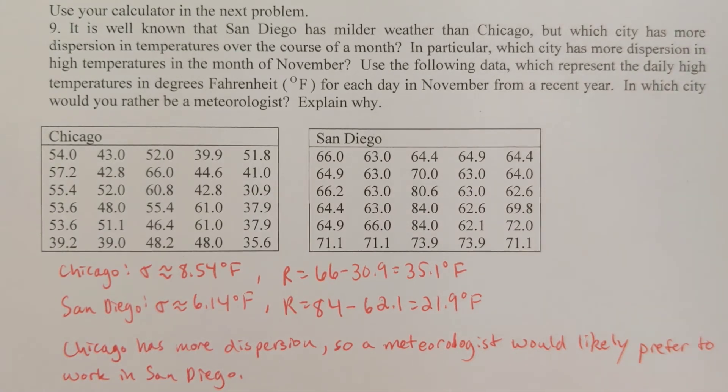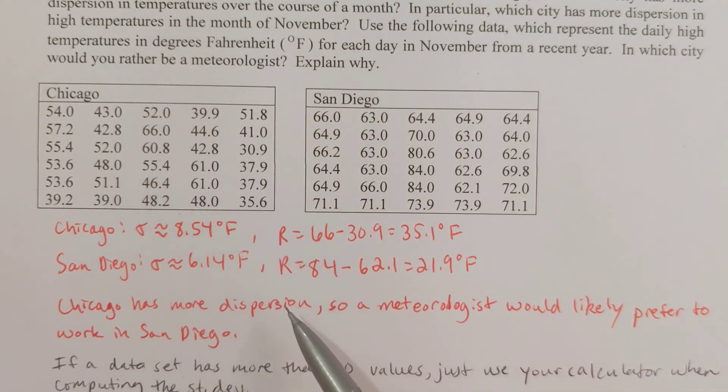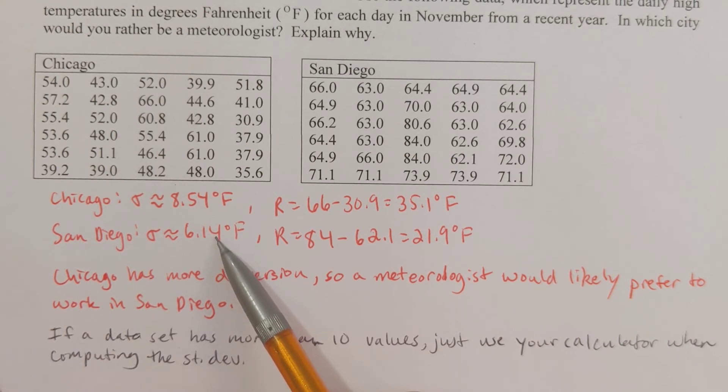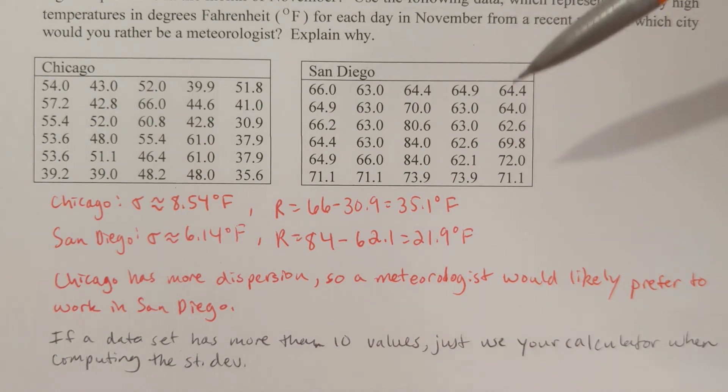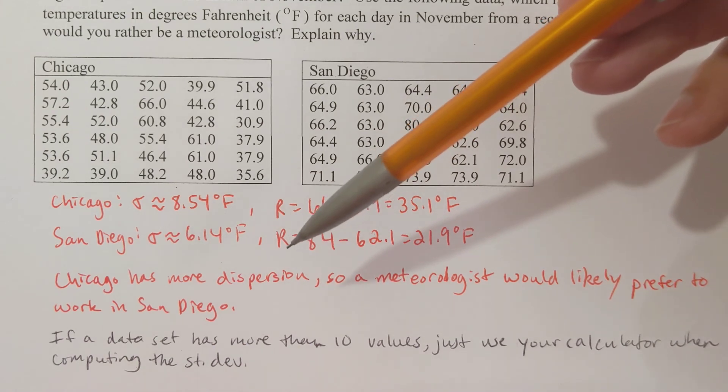So where would you rather be a meteorologist? They're not asking where the weather is better in November, they're asking where would you rather be a meteorologist. That's this person's job, right? And if you screw it up, then you're likely not going to be holding that job for very long. So where would you rather be a meteorologist? Well, Chicago has more dispersion, the degree to which the values are spread out. So meteorologists would likely prefer to work in San Diego, right, since the standard deviation is smaller. One day in Chicago it's 66 and on the next day is below freezing, so it's more likely that somebody could make a mistake if they're a weatherman in Chicago, whereas less likely if they're a weatherman in San Diego.